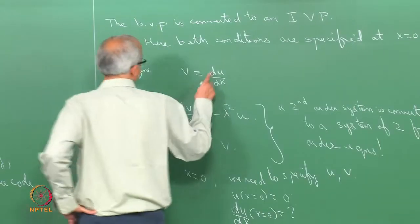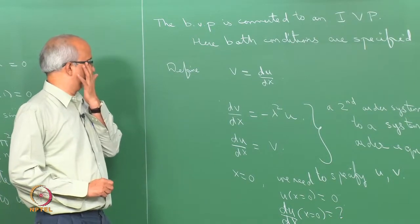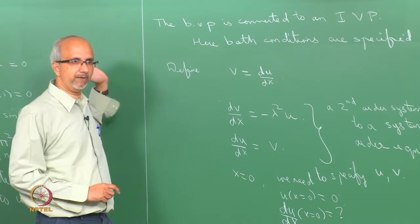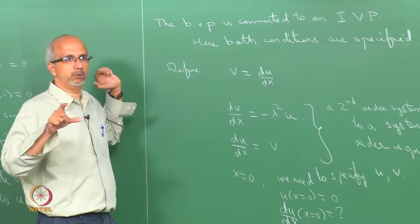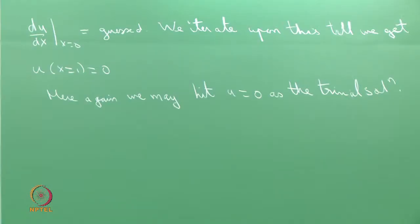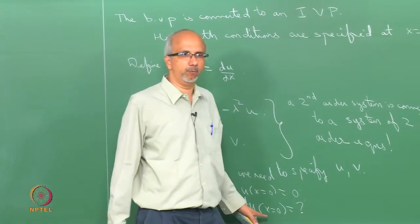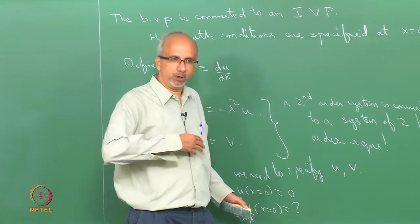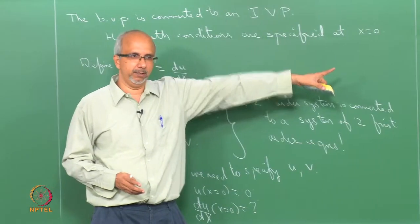Now we take this idea and apply it to the Sparrow problem: stability of flow through two concentric circular cylinders. Since it is a one-dimensional problem, we can choose different guess values, integrate without iteration, and plot the value of u at x = 1 for different guesses.